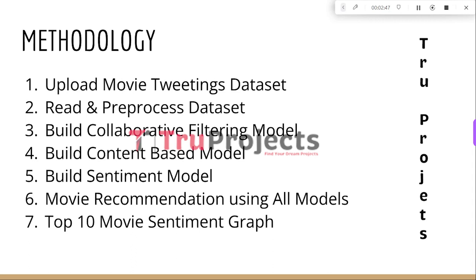The fourth module is Build Content-Based Model. In this module, we build a Content-Based Model. Content-Based Filtering recommends items to users based on the characteristics or features of the items themselves. In the case of Movie Recommendation, the model considers attributes such as Genre, Director, Actor, and Plot Summary to find similarity between movies, and recommends movies based on the user's preferences for those attributes.